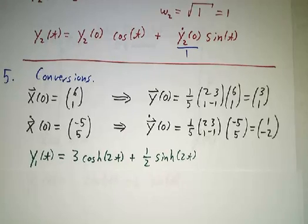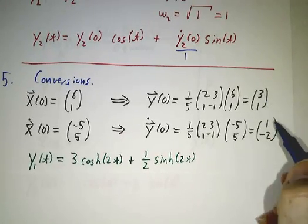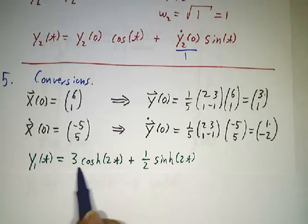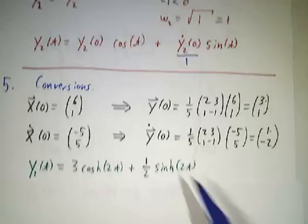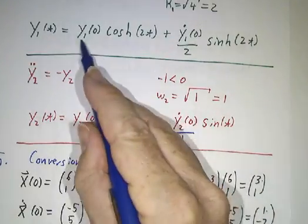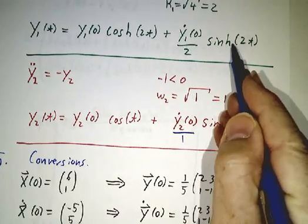And then we can figure out what y1 is. See y1 of 0 is 3, y1 dot of 0 is 1, so we get 3 times the cosh plus 1 over 2 times the sinh. Initial value times the cosh plus initial derivative over 2 times the sinh.